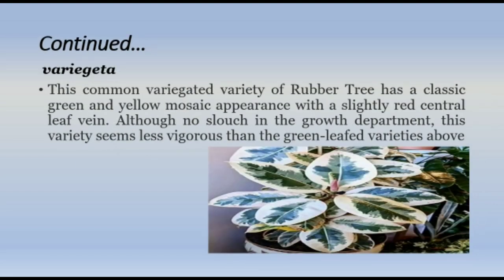Variegata: This common variegated variety of rubber tree has a classic green and yellow mosaic appearance with a slight red central leaf vein. Although not lacking in growth, this variety seems less vigorous than the green-leaf varieties described above.